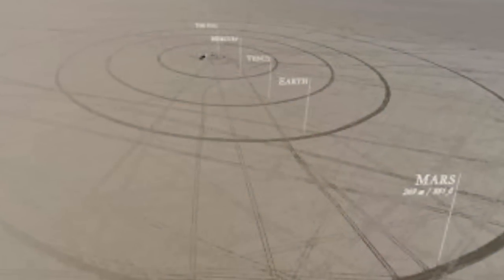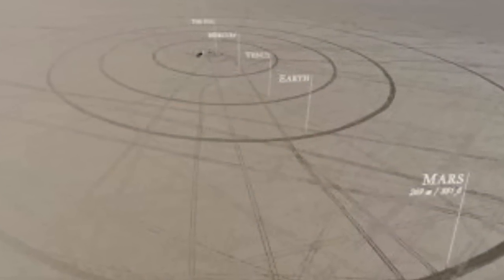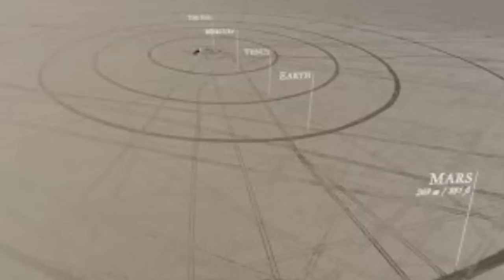From there, the team placed the planets at their relative distance from the Sun and traced each planet's orbit around the Sun in a dry lake bed using their cars.